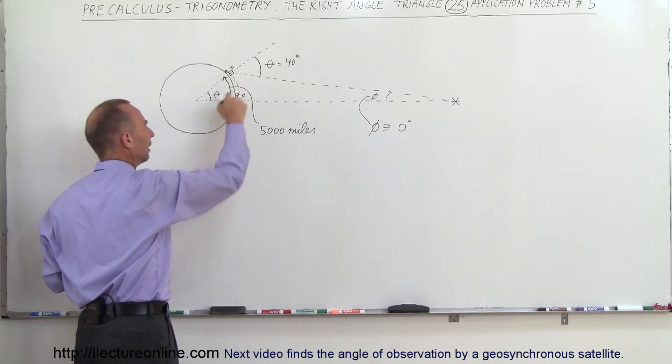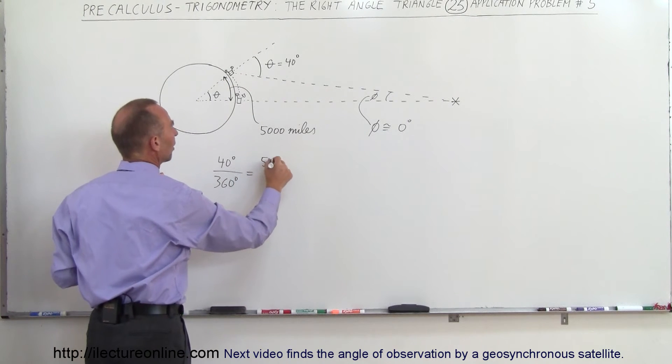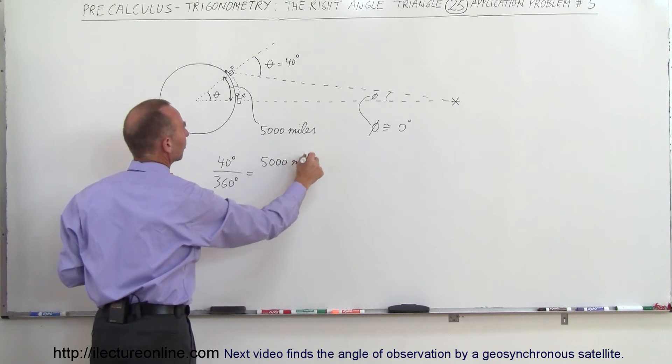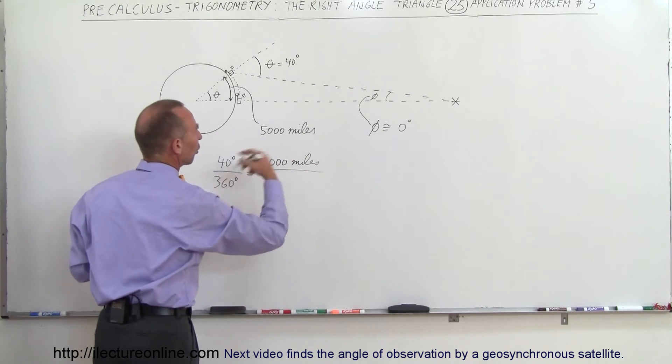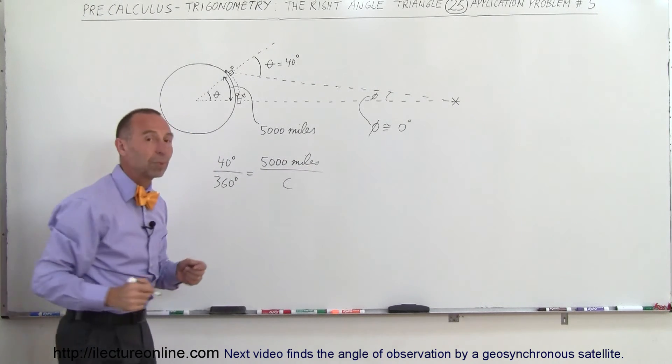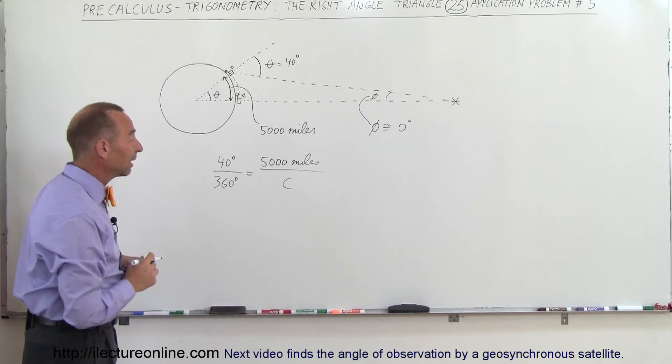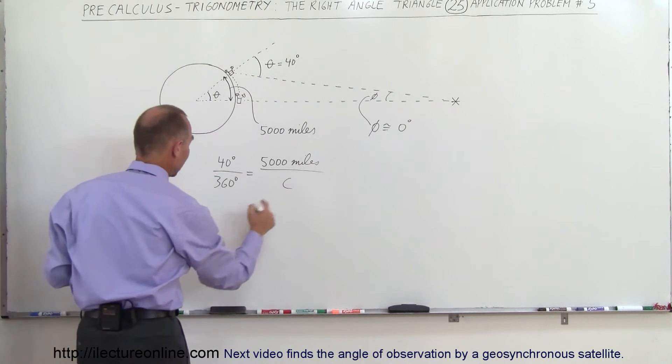We can say the relationship between 40 degrees relative to 360 degrees—which is the fraction of a complete circle of travel—should be equal to the distance that we traveled, 5,000 miles, divided by the total circumference of that planet.